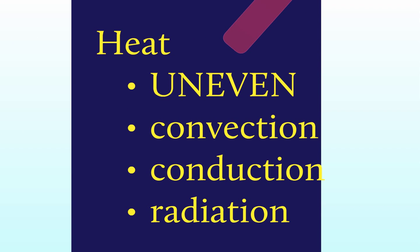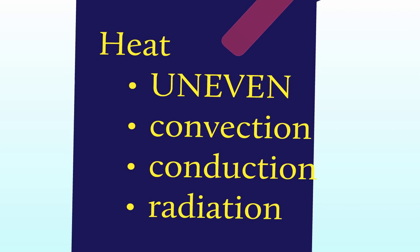Heat. You should know that the Earth is heated unevenly — what heats faster, what heats slower, where is it the hottest, where is it the coldest, what about altitude, and how does that play into heat? And those three methods of heat energy transfer: convection, conduction, and radiation. How do each of those work? Which ones are most important and least important for the atmosphere?